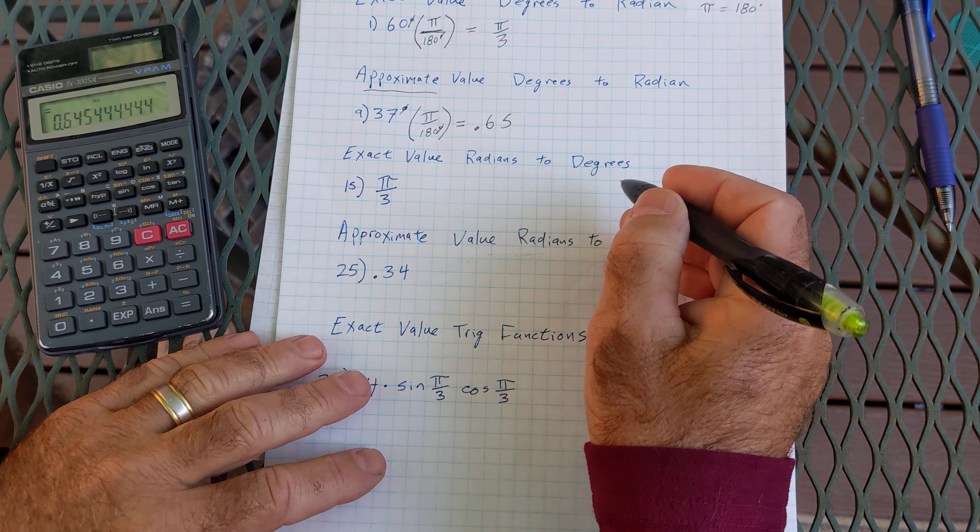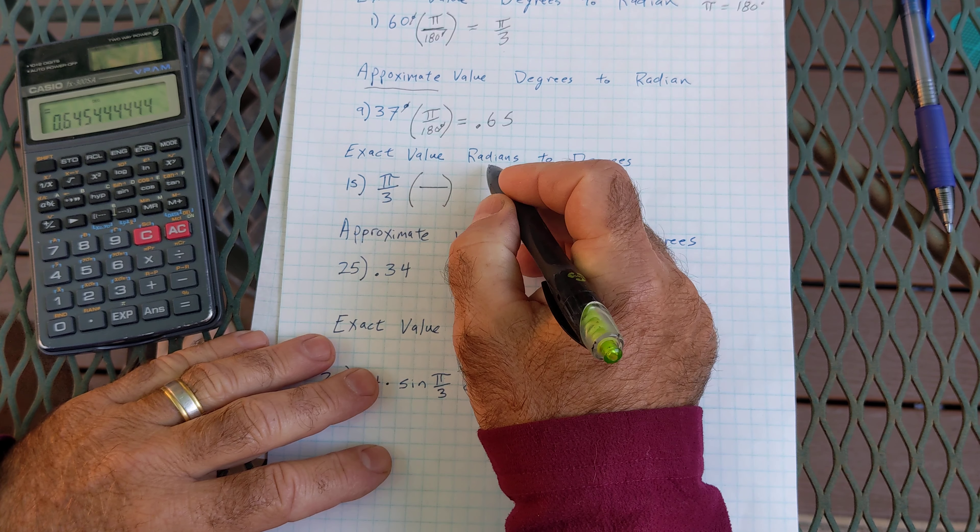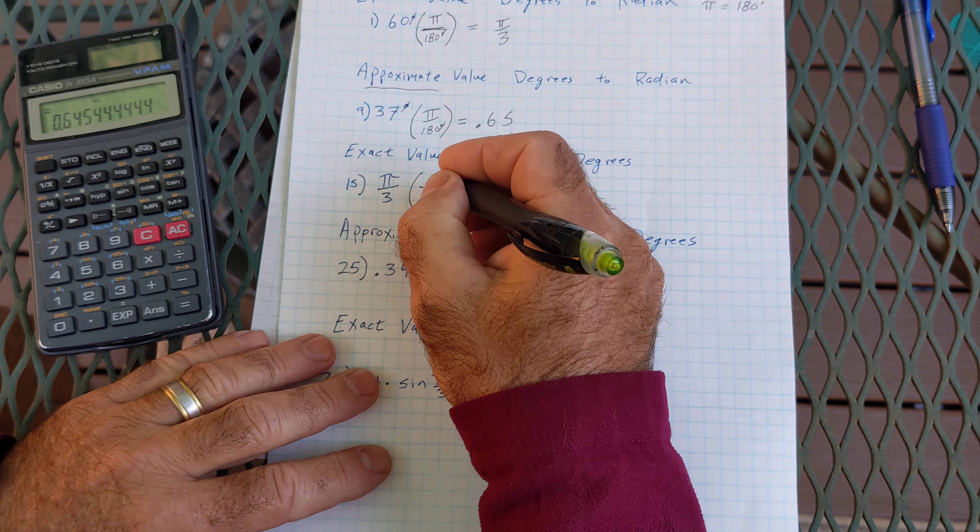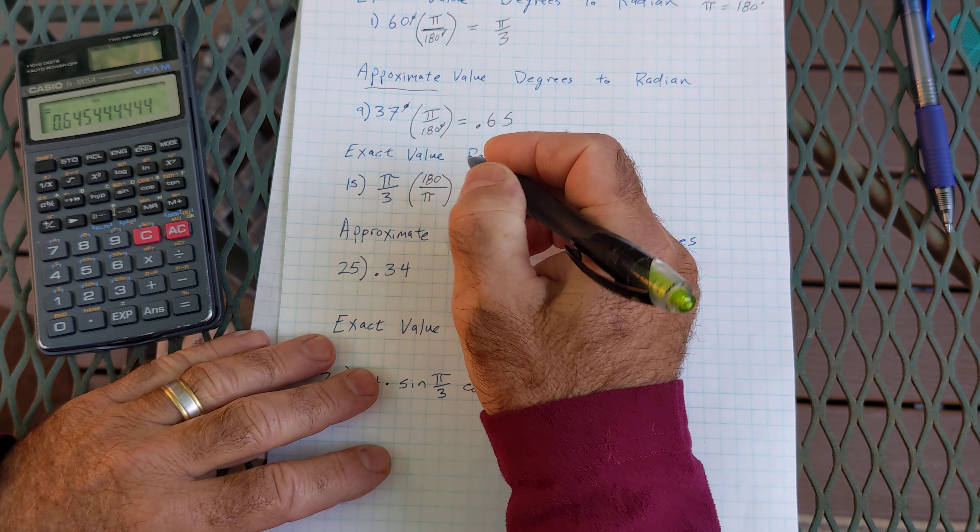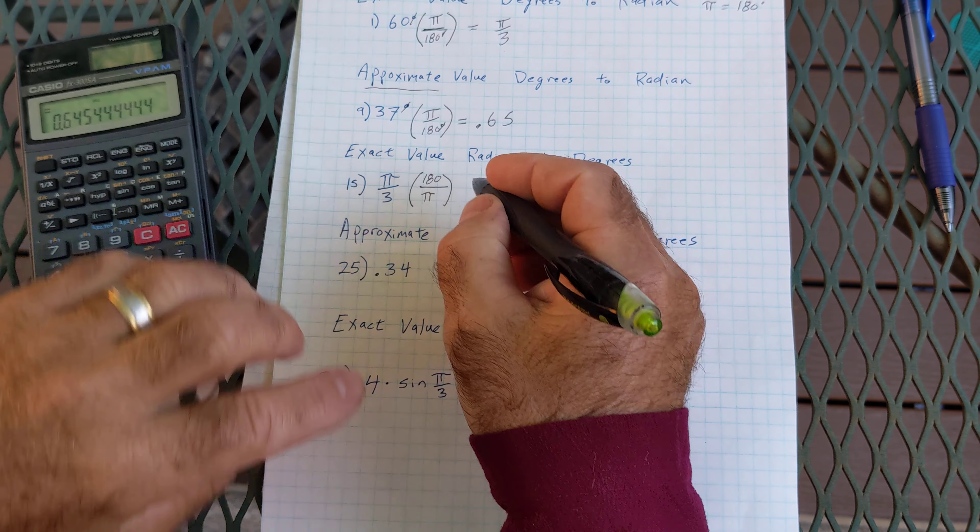Exact value radians to degrees. Still going to multiply by 1, but now I'm going radians to degrees. So I'm going to put pi here and 180 here. So the difference here is I'm reciprocating that because I'm going from radians to degrees.